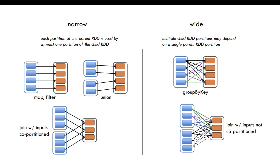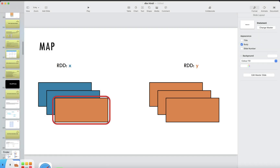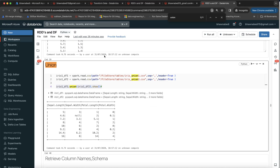Wide transformations, or complex transformations, take more time to execute. Narrow transformations are one-on-one and are on the easier and faster side.